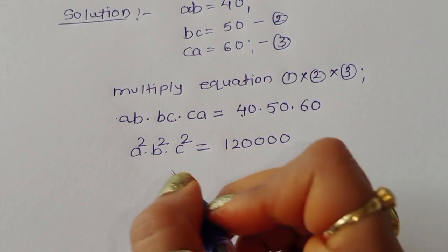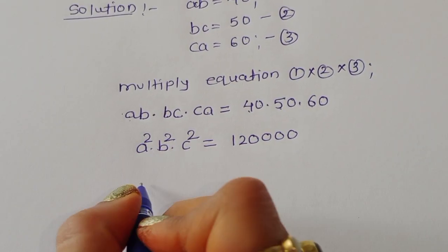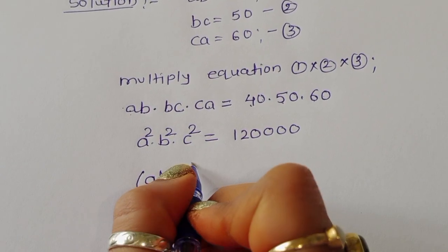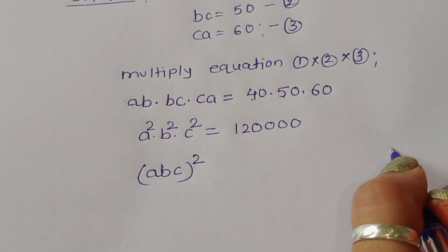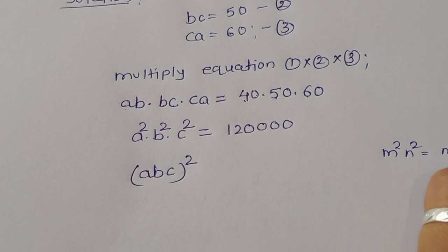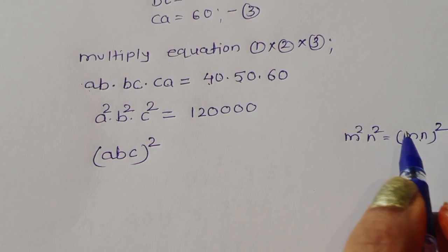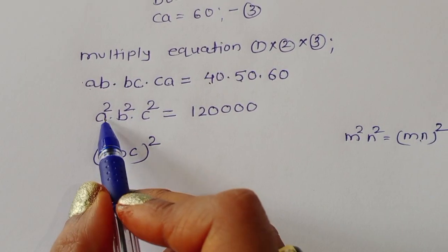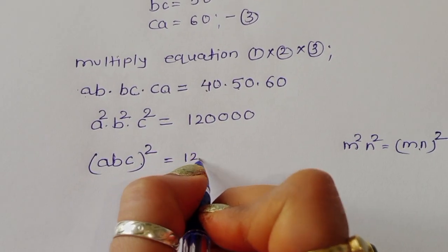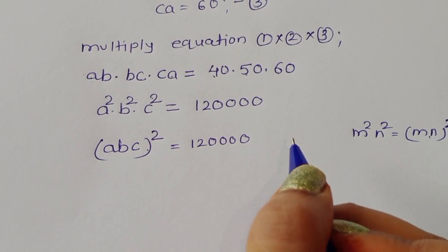We can rewrite a²b²c² as (abc)², using the formula that m²n² = (mn)². So (abc)² = 120,000.